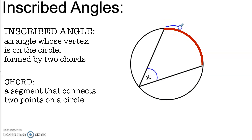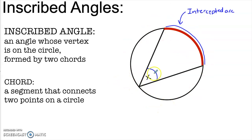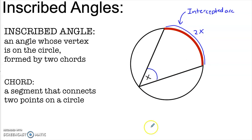That makes this angle what we call an inscribed angle. Just like a central angle, an inscribed angle has an intercepted arc. If you imagine this angle biting down like a mouth, what part of the circle would get chomped off? It would be this part right here, so we call that the intercepted arc. And for an inscribed angle, there's this really interesting relationship where whatever the angle is, that intercepted arc is always double.